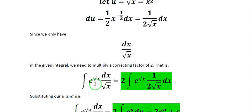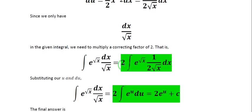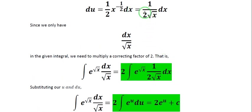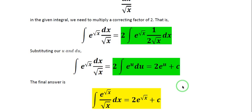Multiplying by the correcting factor of 2, the integral of e to the square root of x dx all over the square root of x equals 2 times the integral of e to the square root of x times 1 over 2 times the square root of x dx. Here e to the square root of x is our e to the u, and 1 over 2 times square root of x dx is our du. Therefore, the final answer is 2e to the square root of x plus C.